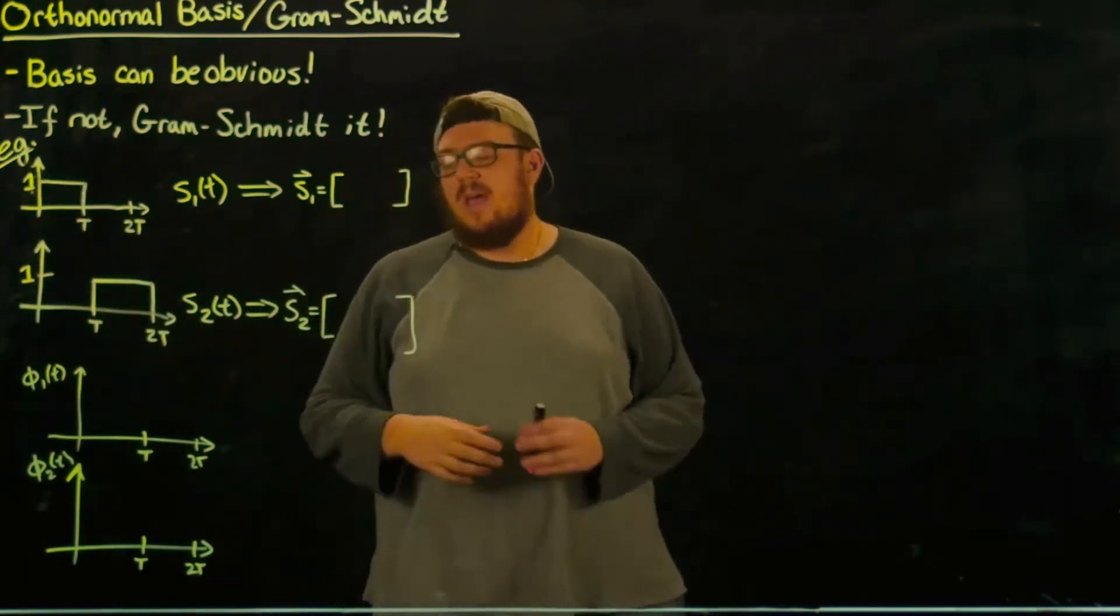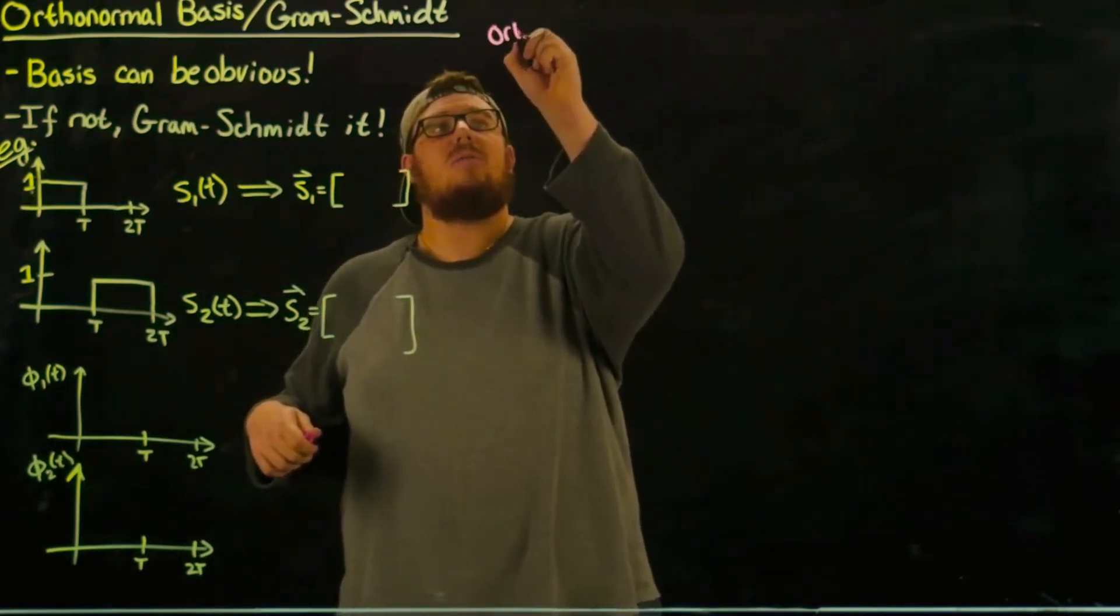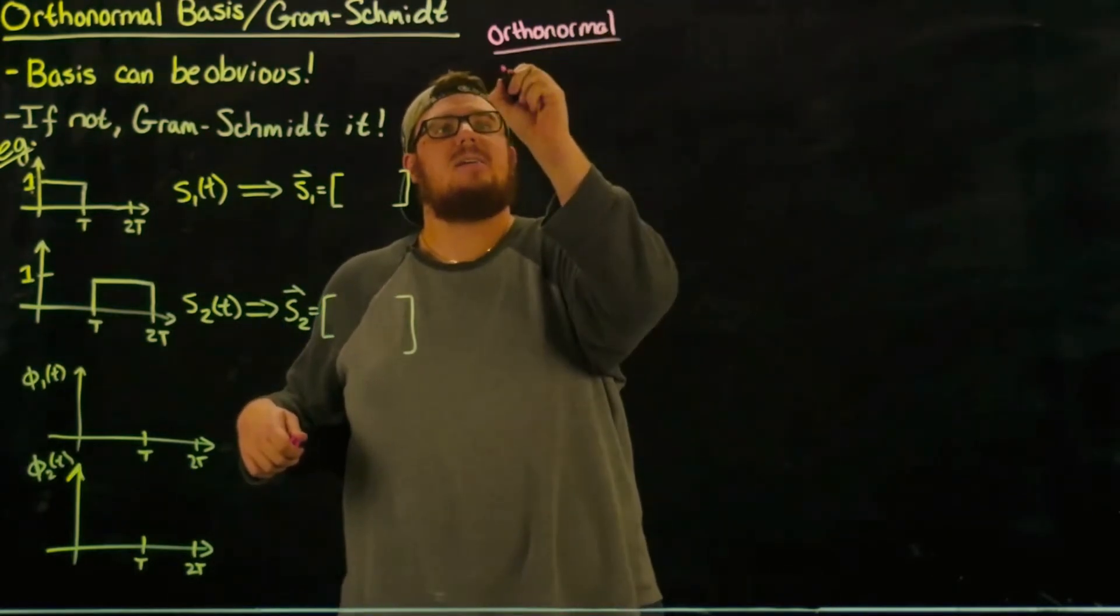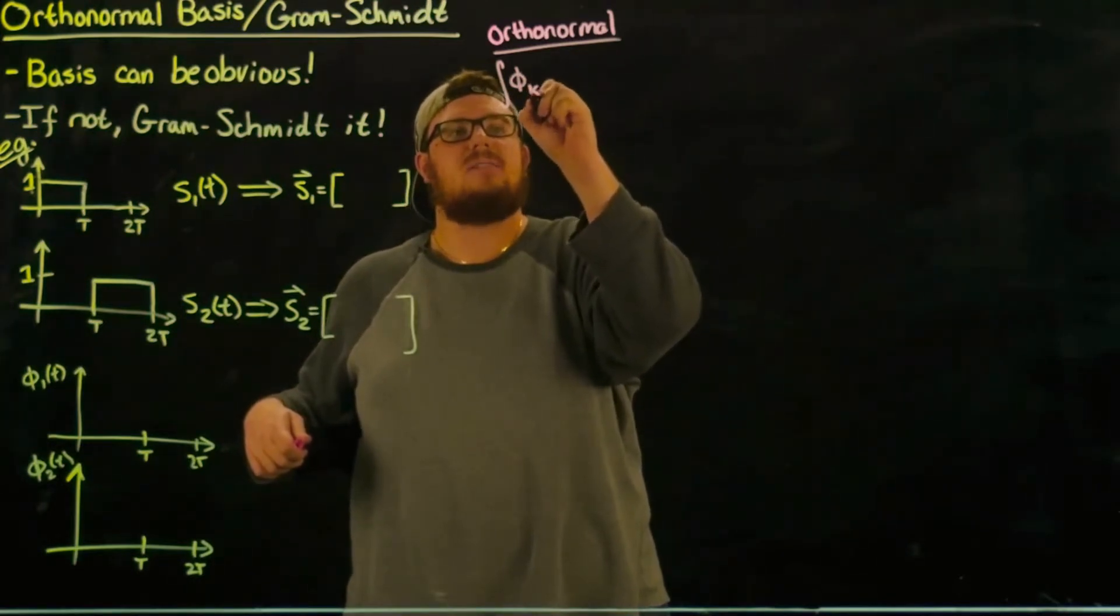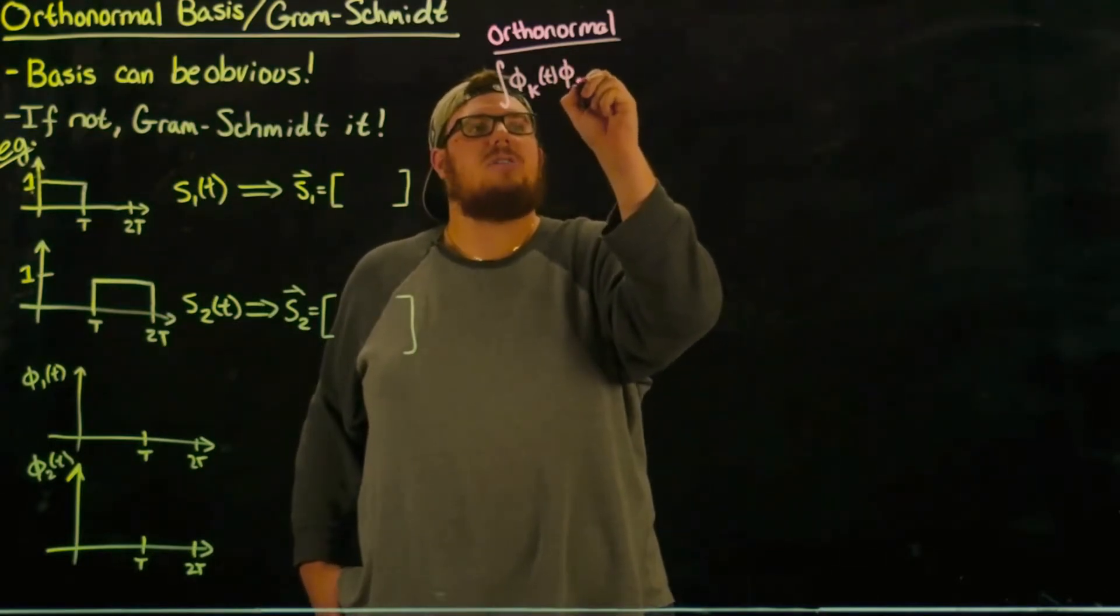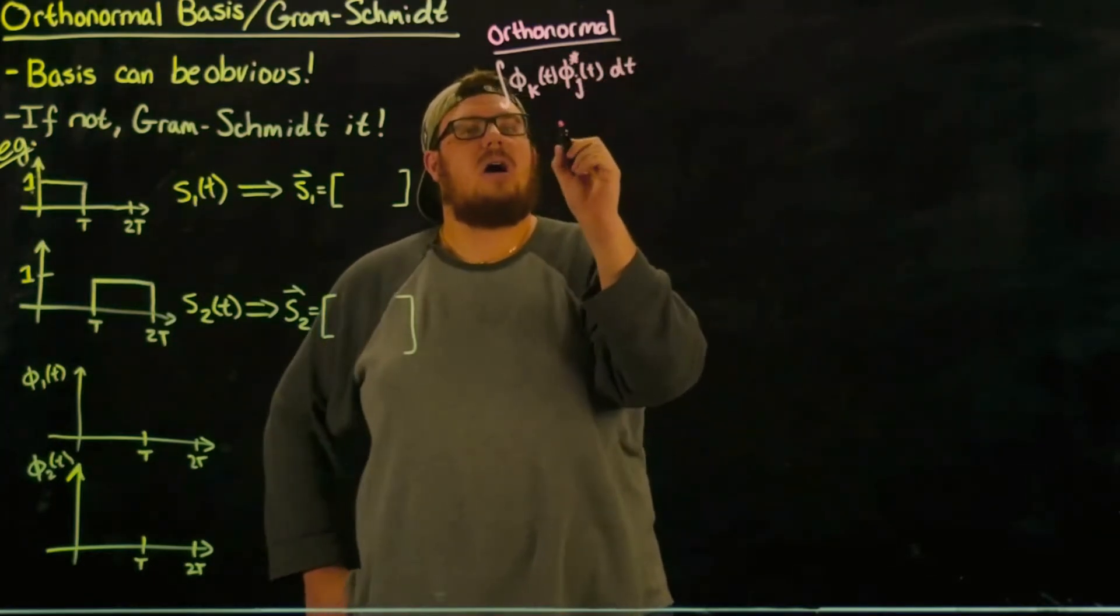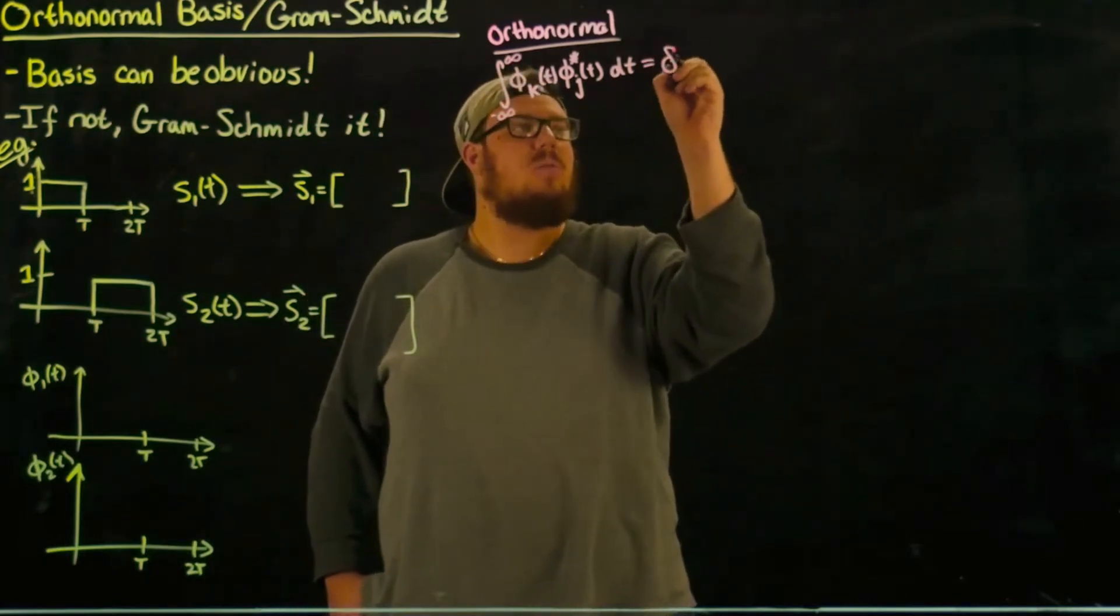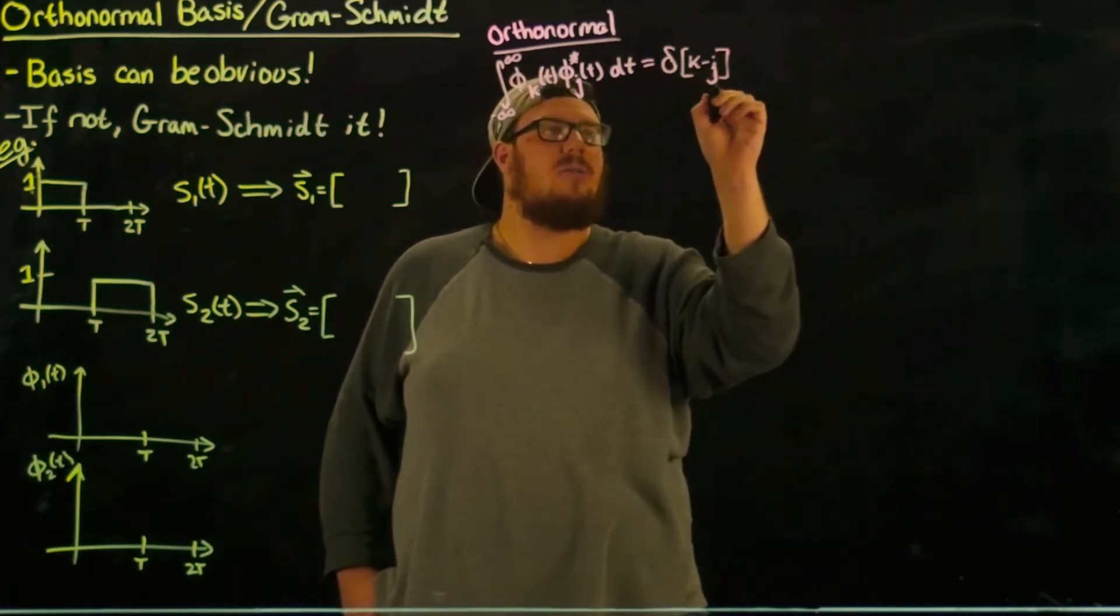And if we recall what orthonormal means, it means that the integral of φ_k(t) times φ_j(t) conjugate dt over all t has to equal 1 when k equals j and 0 otherwise. So we represent that with a Kronecker delta function.